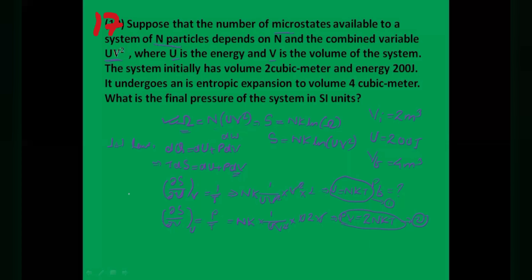From equation 1 (U = NkT) and equation 2 (PV = 2NkT), we get PV = 2U, so P = 2U/V. For the initial state: Pᵢ = 2×200/2 = 200 atm. Now we need to calculate the final pressure.